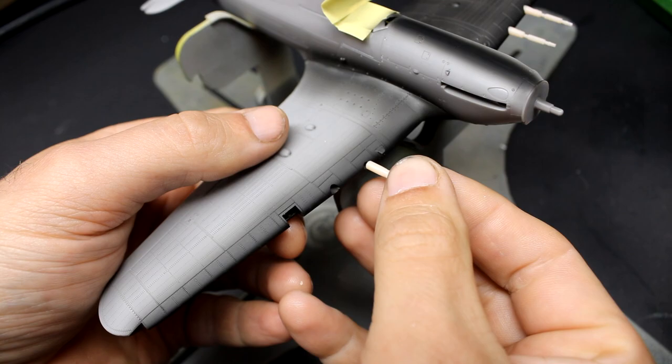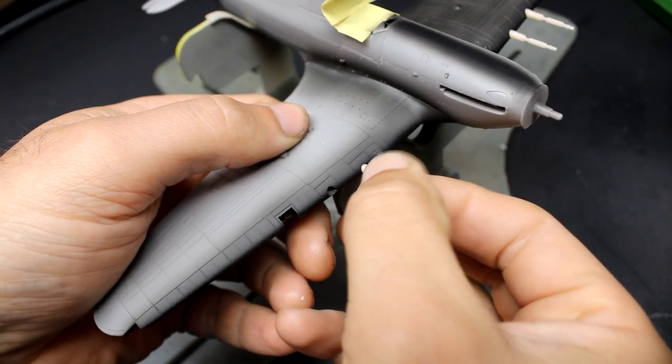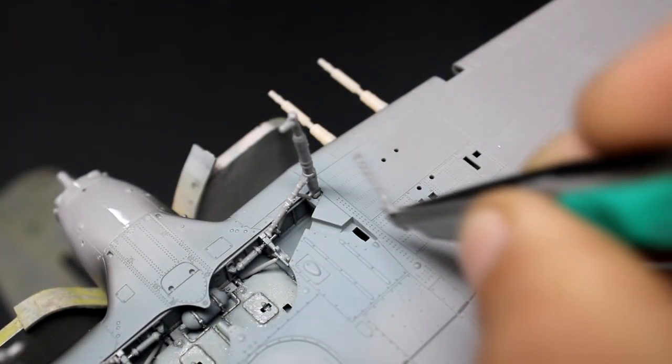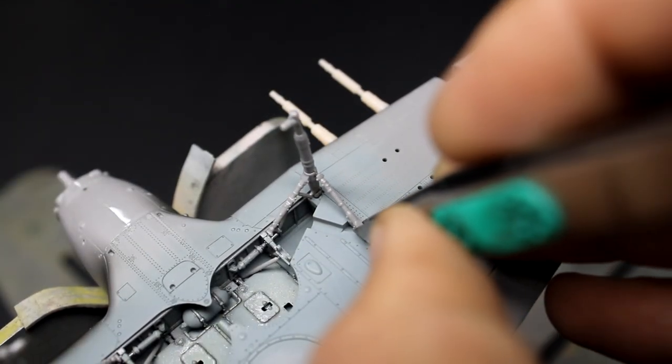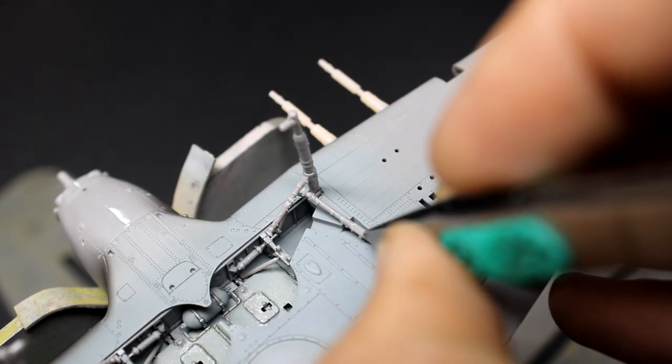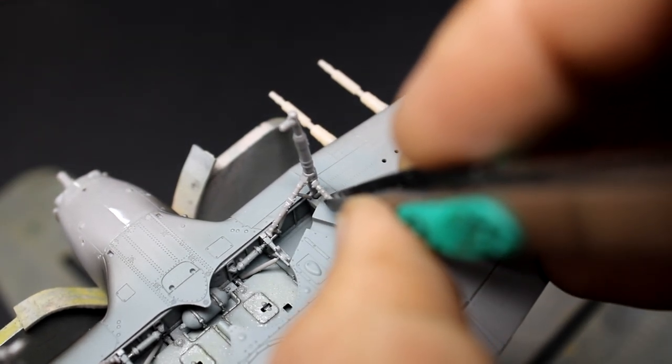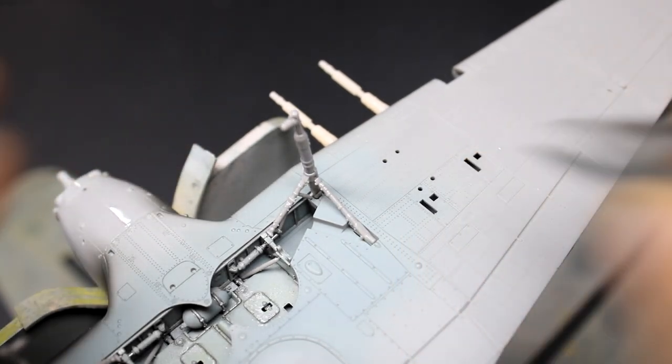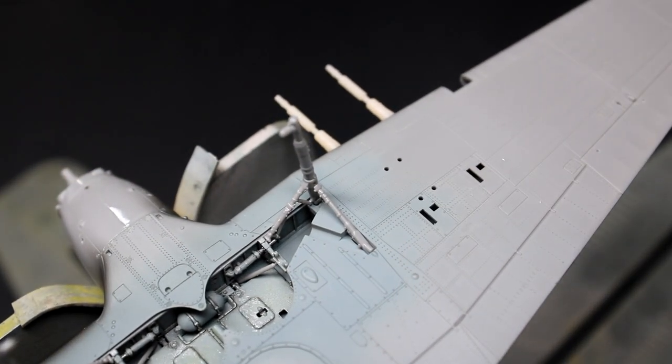Because the sample kit that Arma had sent me was one of the pre-orders, I was very fortunate to also have some 3D printed cannons, seats, and exhaust pipes for the Hurricane. To make painting of the landing gear easier, I dry-fitted all the pieces in place before gluing the braces to the main strut. Then after it dried, I was able to remove it for paint.